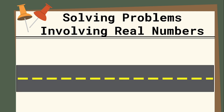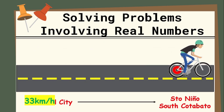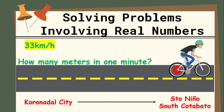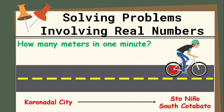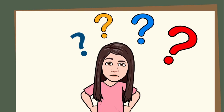Let's start with this problem. A cyclist is traveling 33 kilometers per hour from Coronadel City to Santo Niño, South Cotabato. How many meters does the cyclist travel in 1 minute? You may pause the video while answering. Time's up! The correct answer is 550 meters. Did we get the same answer? But what are the steps you used to solve this problem? We will talk about these step-by-step procedures as we go through different examples.